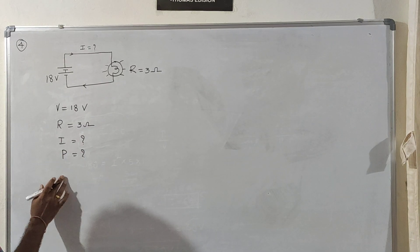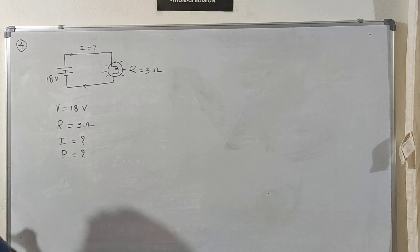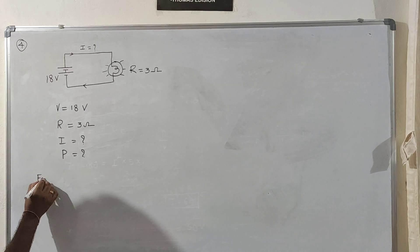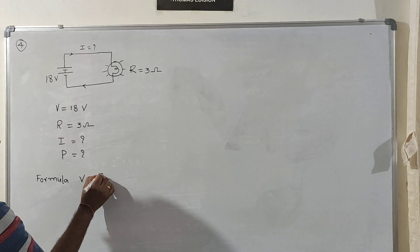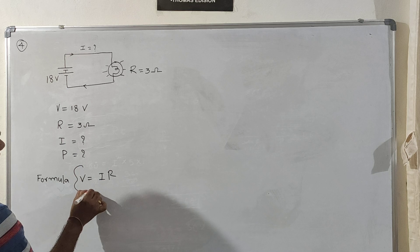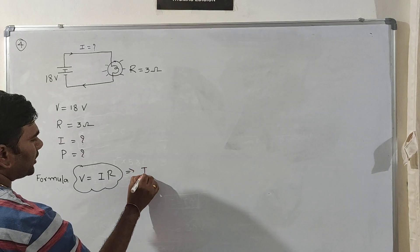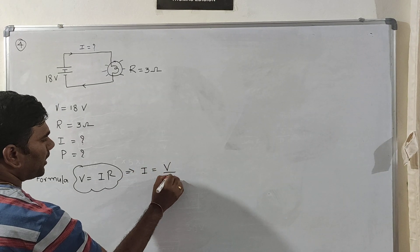First, let us find current I using Ohm's law. The formula is V equals IR. Using this formula, I equals V by R.